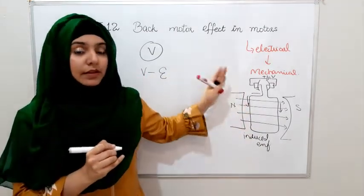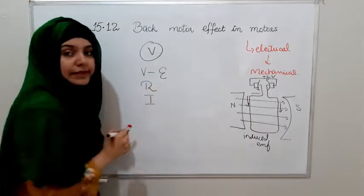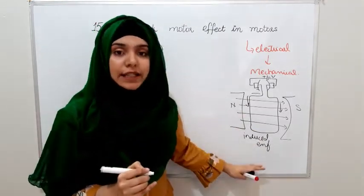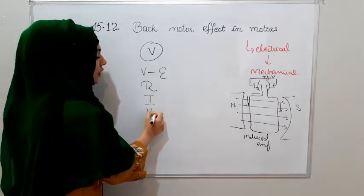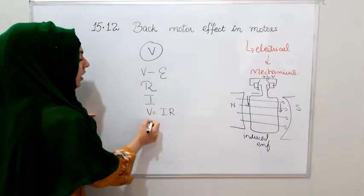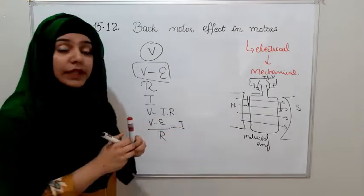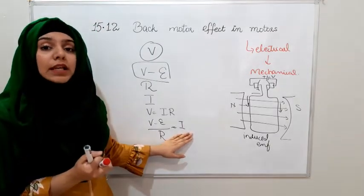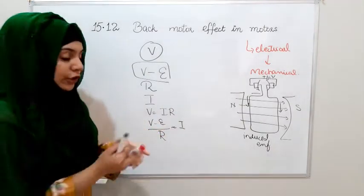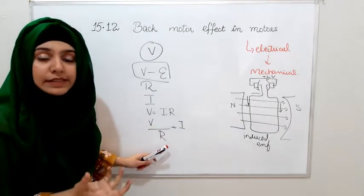What is happening now? Current is produced in the circuit; the coil has a resistance R, and the current is I. If you want to know how much current passes when induced EMF is present, we use Ohm's law: I = (V - induced EMF) / R. Initially, when the motor just started, there was no induced EMF, so the current was simply I = V / R.